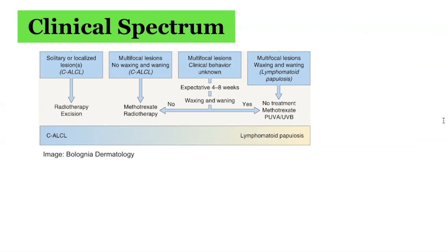There are some cases referred to as borderline cases — patients in whom, despite careful clinicopathological correlation, a definitive distinction between cutaneous anaplastic large cell lymphoma and lymphomatoid papulosis cannot be made. In these cases, long-term clinical follow-up will generally help disclose whether the patient has one condition or the other.